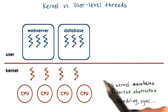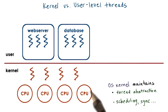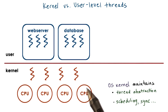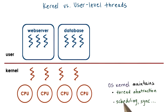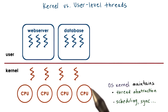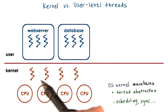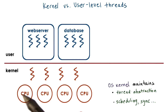Supporting threads at the kernel level means that the OS kernel itself is multi-threaded. To do this, the OS kernel maintains some abstraction for a thread — a data structure to represent threads — and it performs all of the operations like synchronization, scheduling, etc., in order to allow these threads to share the physical resources.